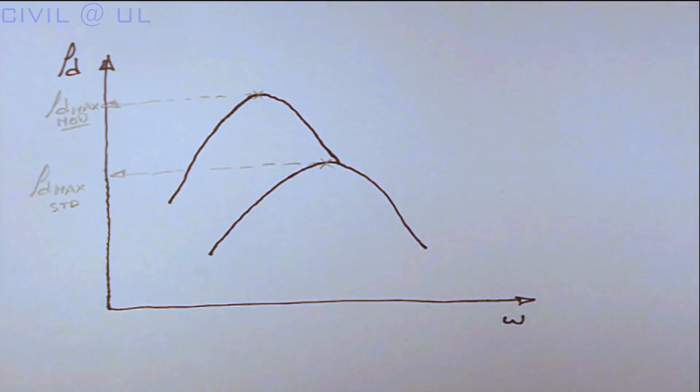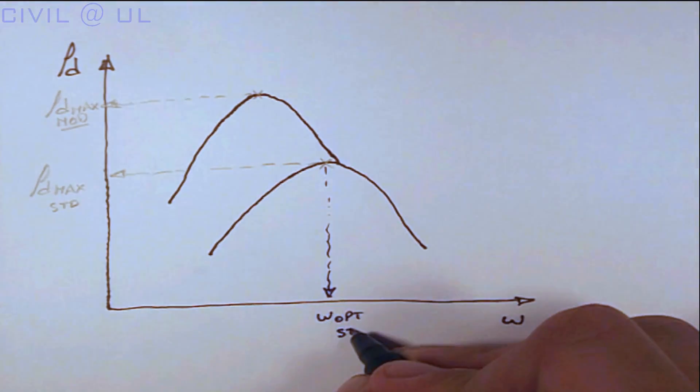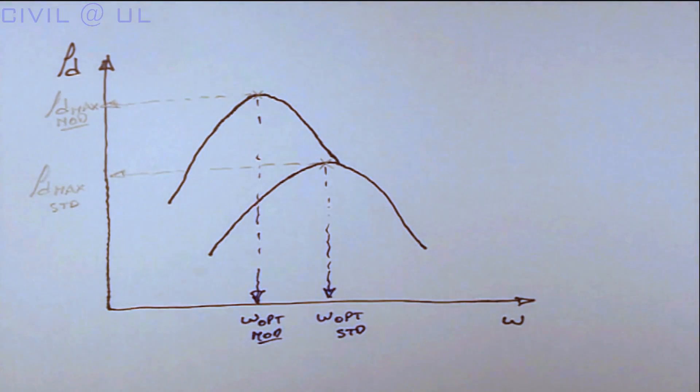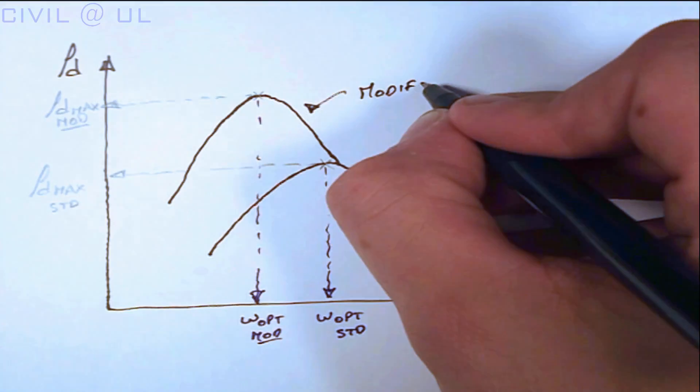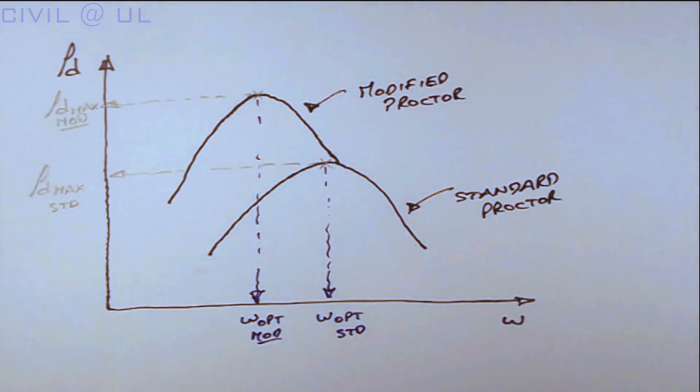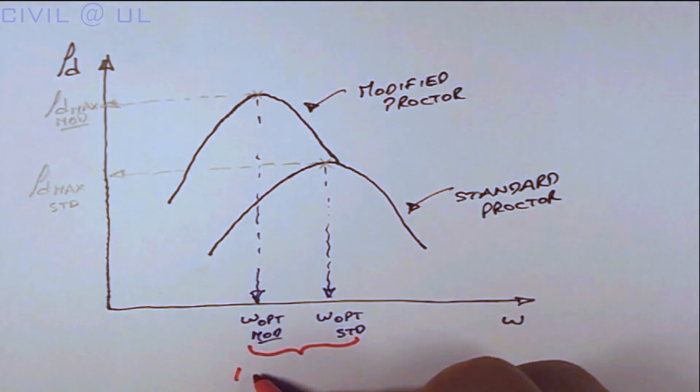Note that as the dry density increases the optimum moisture content reduces. Therefore, it is not possible to achieve a higher dry density at the same moisture content.